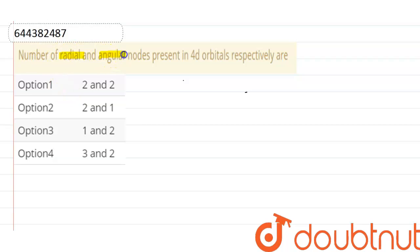Number of radial and angular nodes present in 4d orbitals respectively are? So in this question we have to